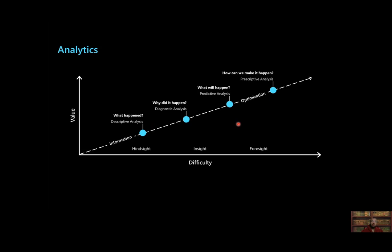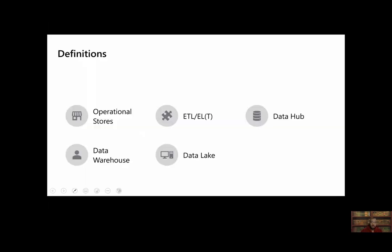If we want to influence our sales, that leads to the last and hardest type: prescriptive analytics — prescribing certain actions to be taken to reach a goal. With this, we'll go through some definitions: operational stores, the ETL process (and sometimes ELT), the data hub, data warehouse, and data lakes.